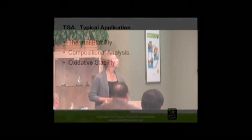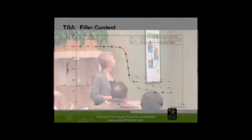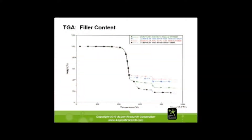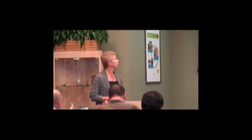Typical applications include thermal stability, compositional analysis, and oxidation stability. Now with some sample data — these were all supposed to be the same material. As you can see, the top portion of the curve, the polymer portion, is fairly much all the same — they are all on top of each other. But when you get to the inorganic portion of the sample, there is a huge difference. This one has about 20% inorganics and this one has about 45% inorganics, so you're going to have a totally different feel to those materials.